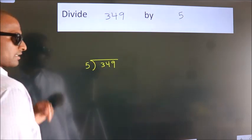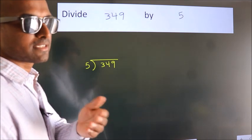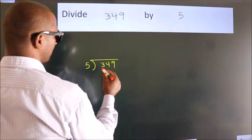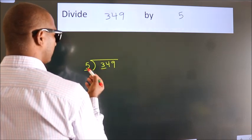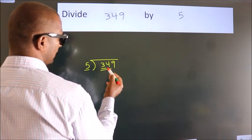This is your step 1. Next, here we have 3, here 5. 3 is smaller than 5, so we should take two numbers: 34.